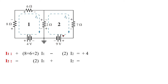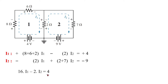For the second loop equation, the current I2 passes through resistors 8, 2, and 7 Ohms. The equation gives: minus 2 I2 plus 4, and then minus 2 I1 plus 9 I2 minus 9. We can solve this using determinants to find the values.